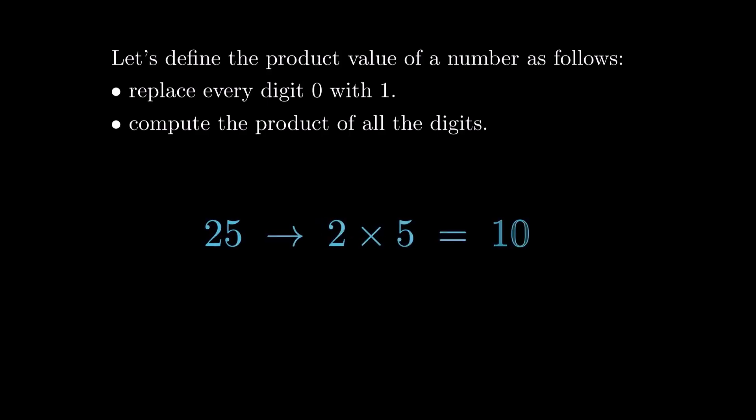Let's define the product value of a number as follows. Replace every digit 0 with 1, then compute the product of all its digits. For example, the product value of 0 is 1. The product value of 25 is 10.